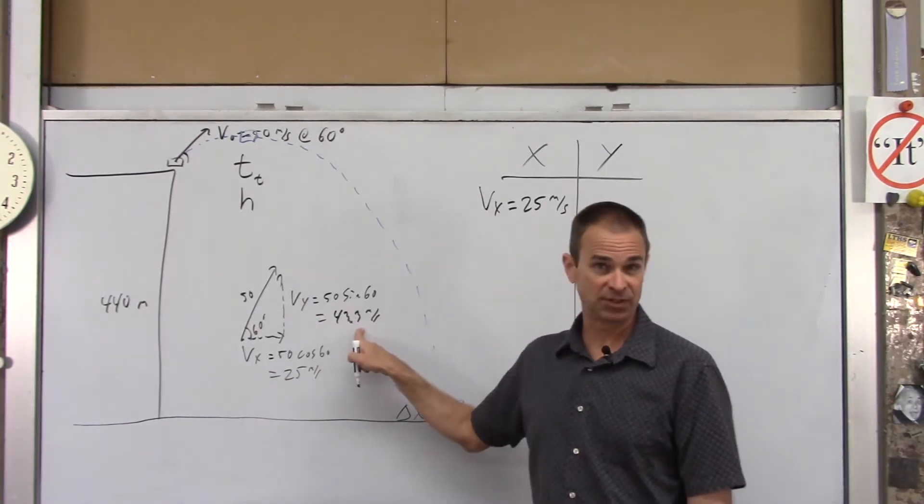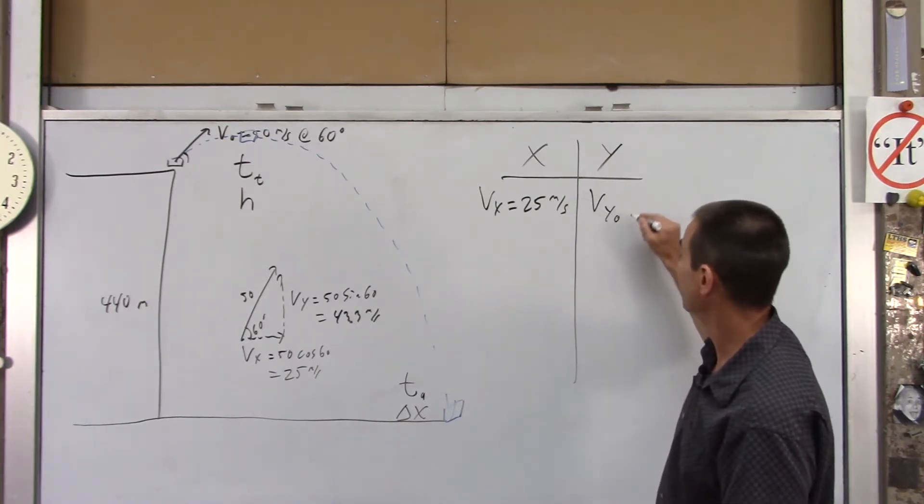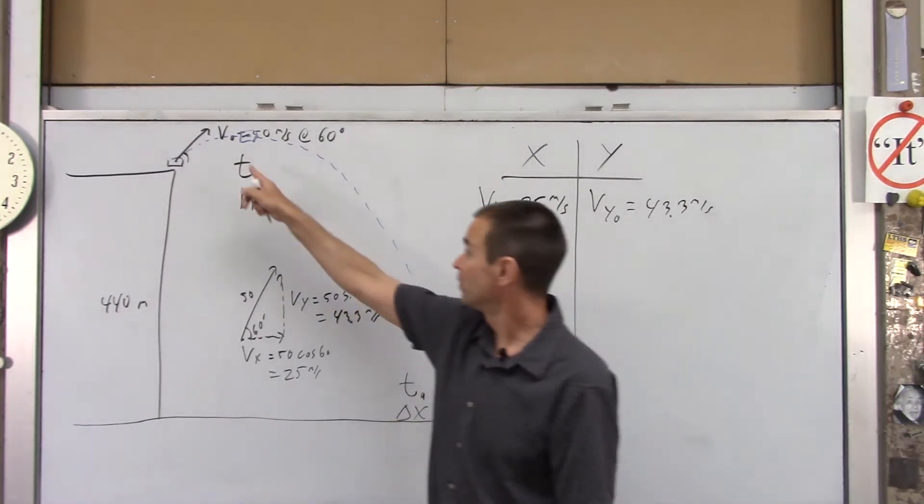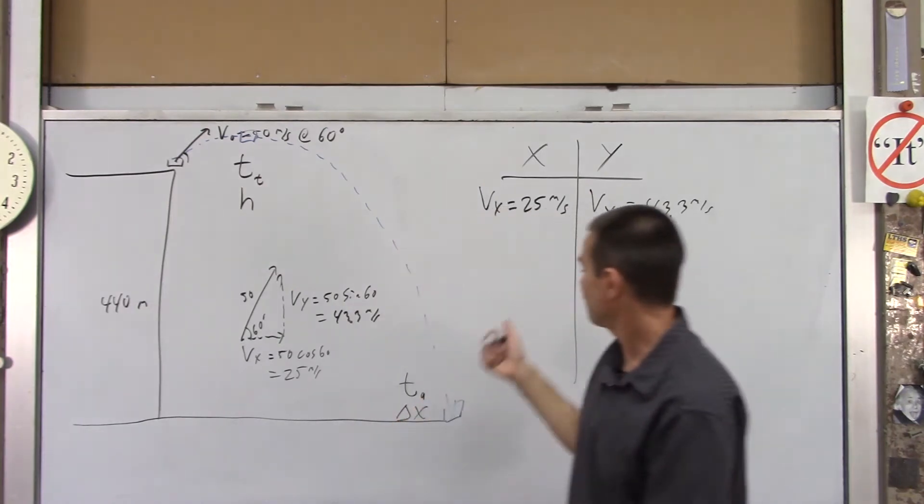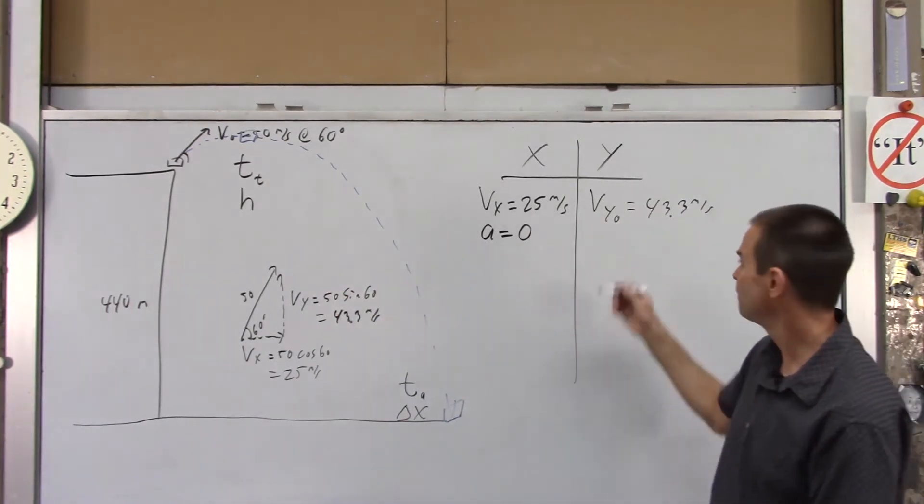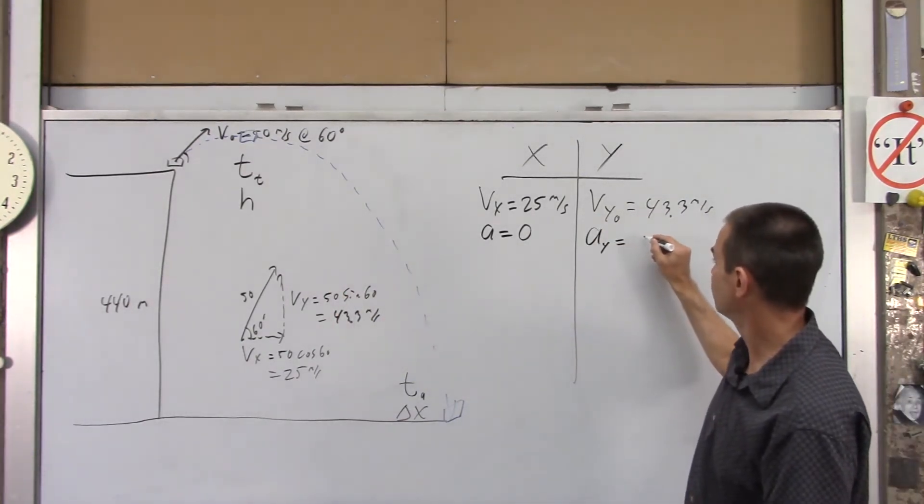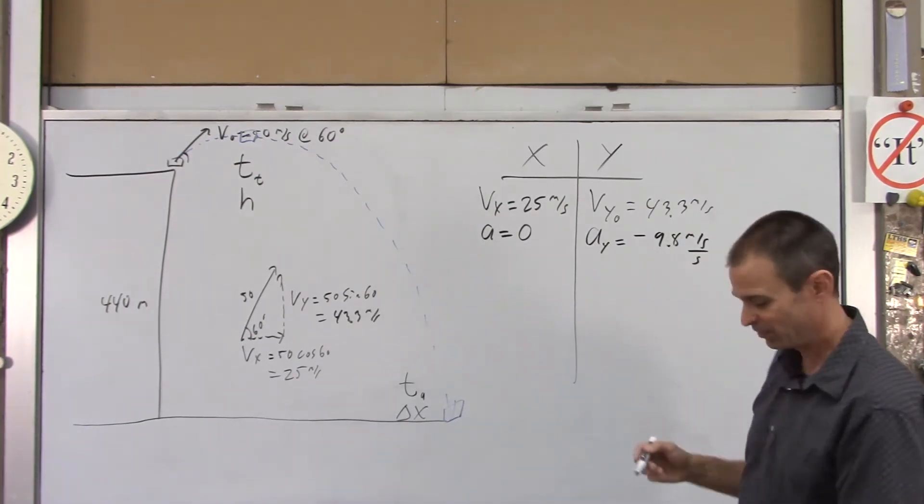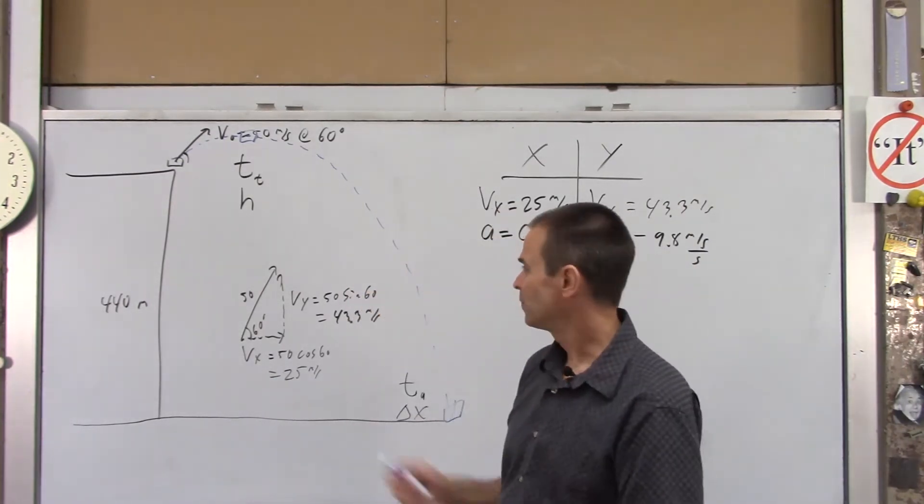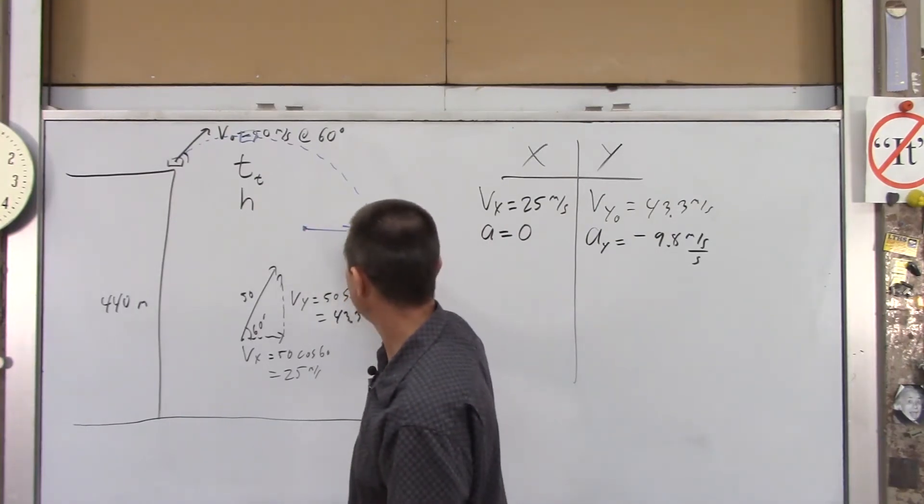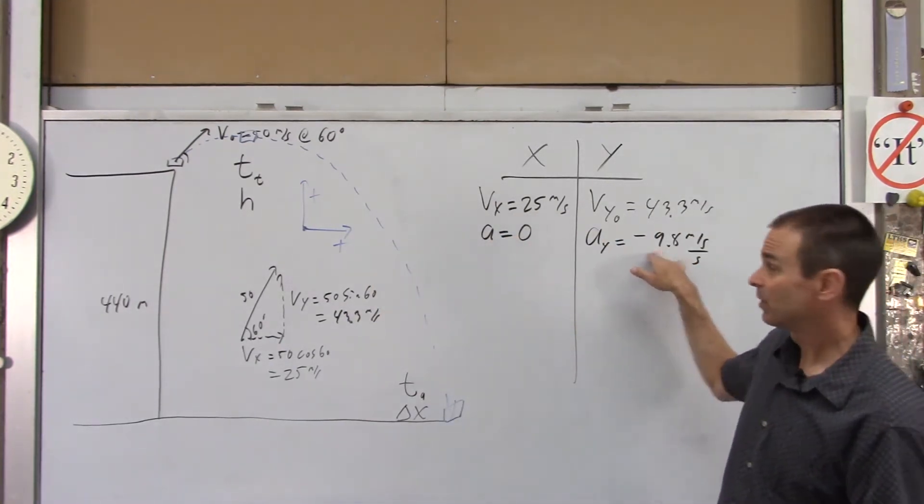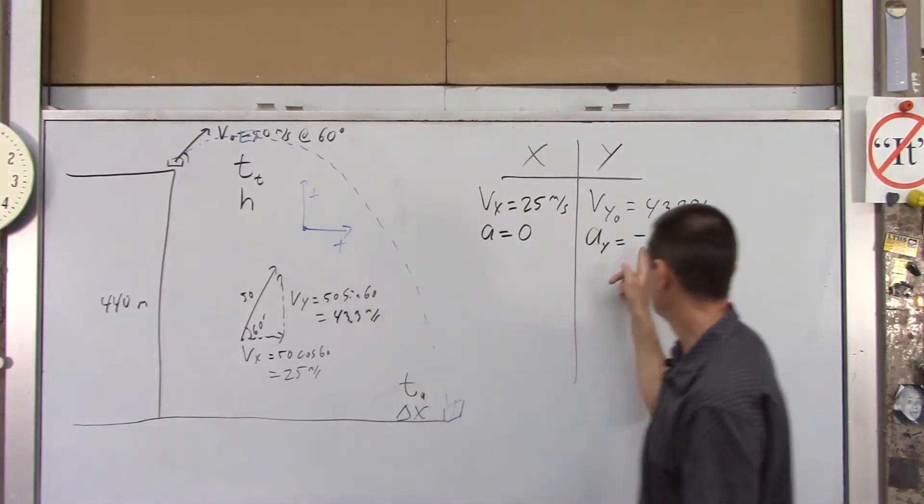This vy, on the other hand, is going to change. I'm going to call that vy0, and that is 43.3 meters per second. That will change as the book flies through the air. Other things I know, I know acceleration in the x direction is zero. There's no horizontal gravity. a sub y is gravity, which is negative 9.8 meters per second per second. Now, you've got to be real careful. Which way do you want positive to be? So I am going to use the coordinate system to the right is positive, and up is positive. So having said that, gravity points down. Gravity is in the opposite direction of this, so I make that number negative.